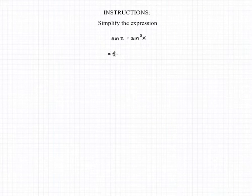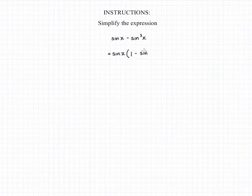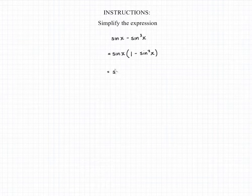For this question, we can begin by factoring out a sine x from both of the terms in our expression, and that will leave us with 1 minus sine squared x.